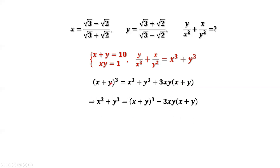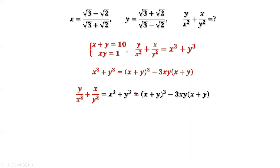Moving terms to the other side, we have the formula. Now we are ready to plug in. The question is to find x cubed plus y cubed. Plugging in those numbers: that's 10 to the power of 3 minus 3 times xy — which is 1 — times x plus y — which is 10. Simplifying, we have the answer: 970 is the final answer.